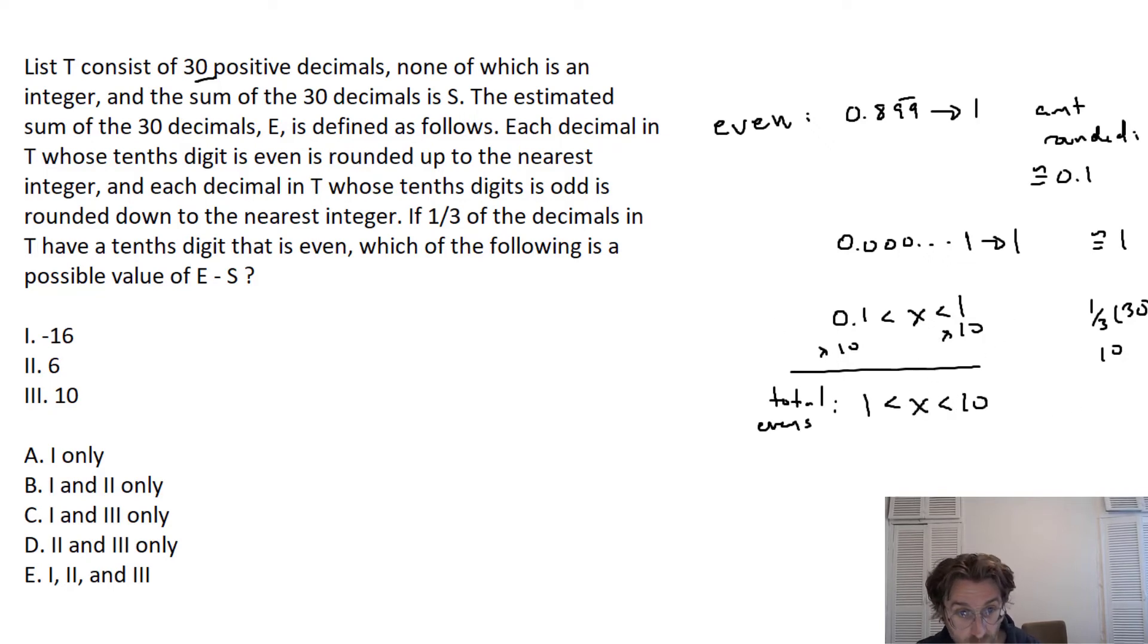So we do the same thing for the odds. Now, of course, in this case, we know that there are 20 odds because there's 10 evens. So then what we'll do is go for odd. And it says each decimal in T whose tenths digit is odd is rounded down to the nearest integer.